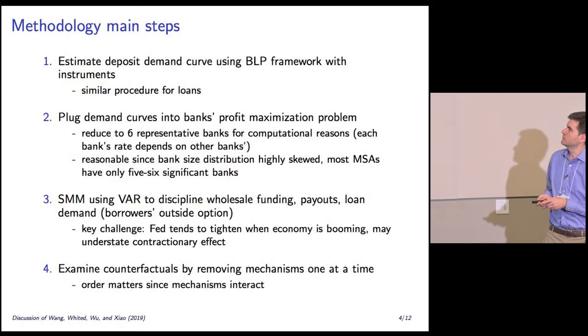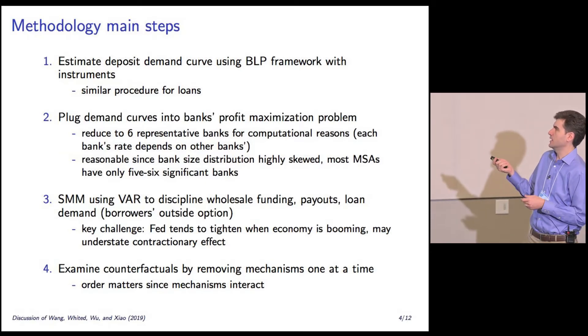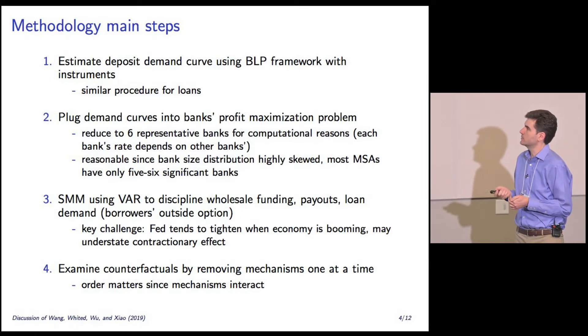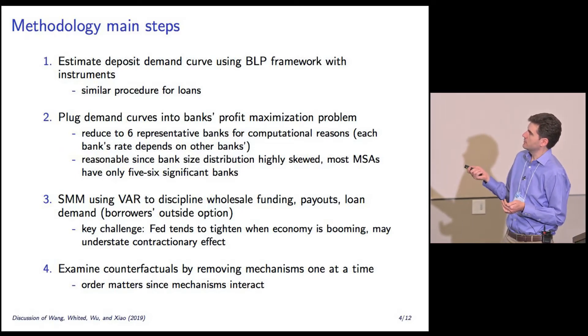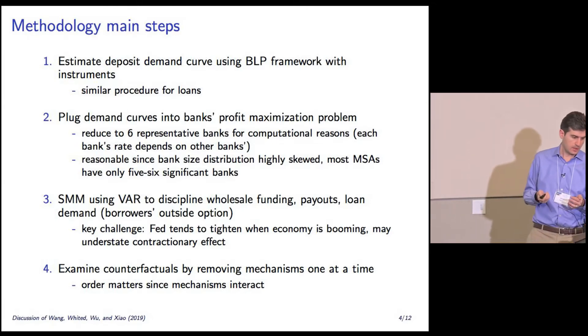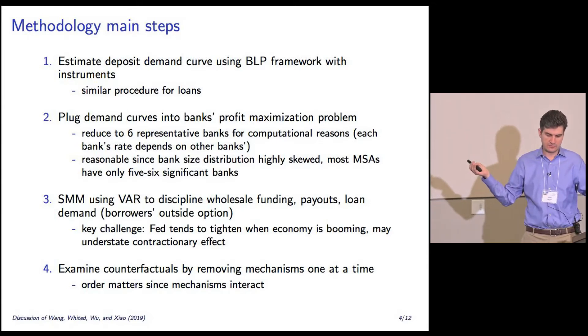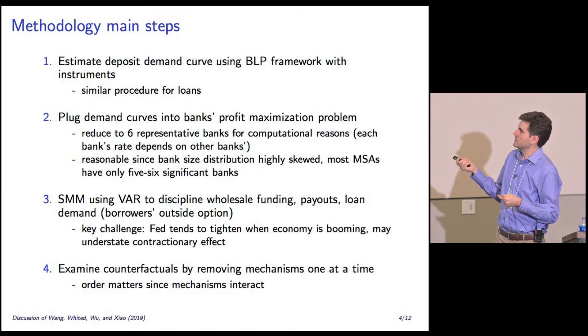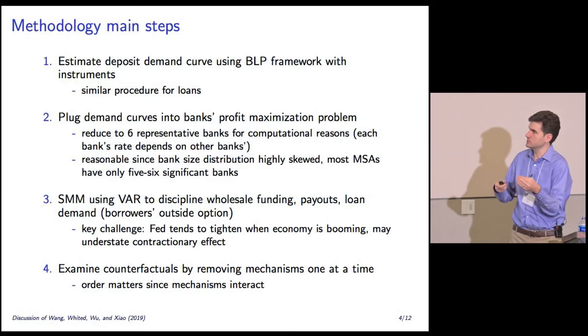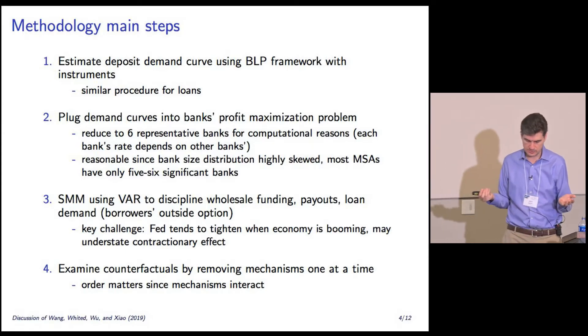What's the methodology? They're going to estimate deposit and loan demand curves using the BLP framework with some instruments. Then they plug these demand curves into banks' profit maximization problem. There are thousands of banks out there, so they reduce to six representative banks for computational reasons because of the strategic interaction. That's actually pretty reasonable, because the distribution of bank size is extremely skewed, and in most banking markets at the MSA level there really are about five or six banks with significant presence.